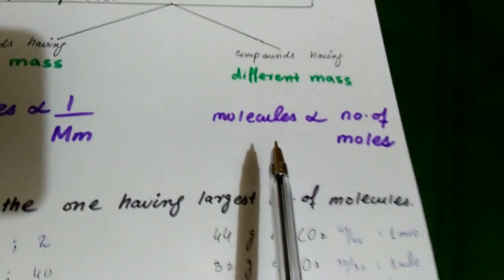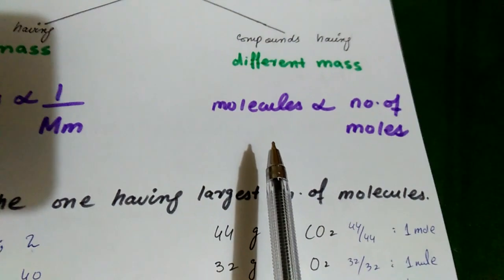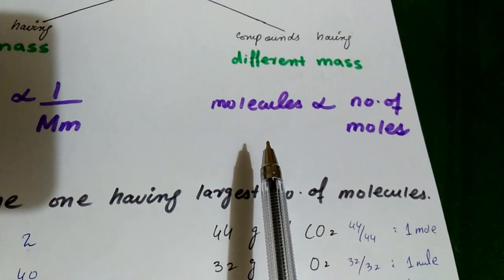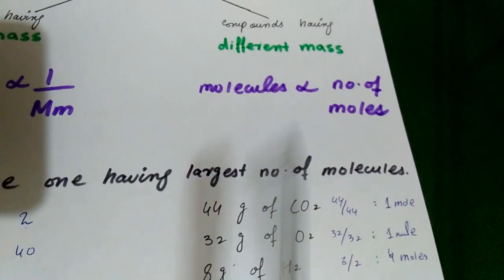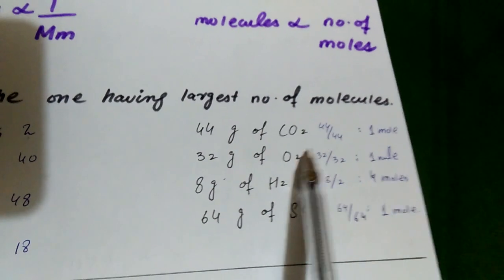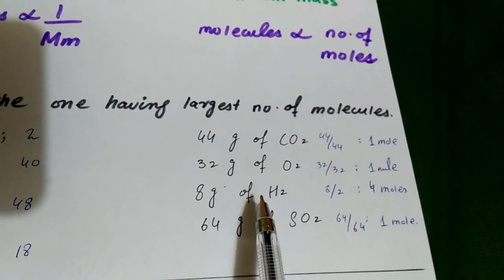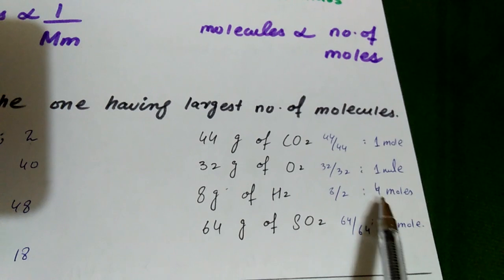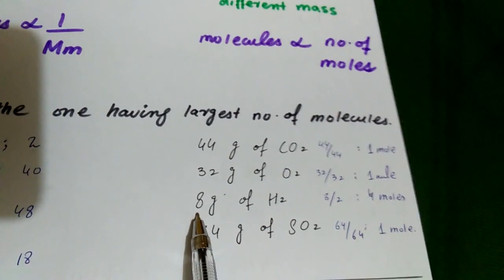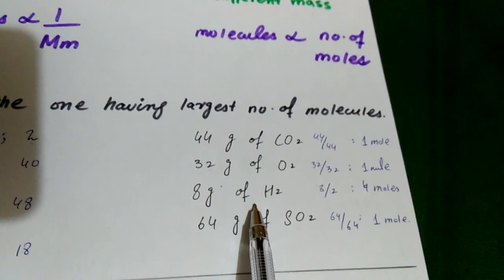The second condition: different compounds. We have to find out which one has the largest number of molecules. So if they have different mass, we have to write down. After that, the number of molecules will be the highest. The most molecules will be the highest. See you again!